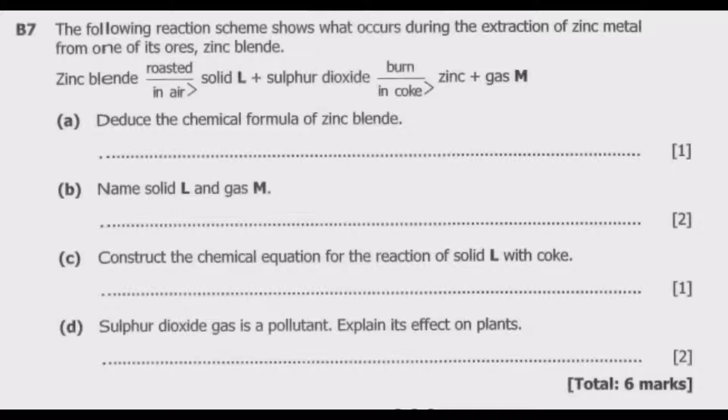The following reaction scheme shows what occurs during the extraction of zinc metal from one of its ores, zinc blende. Zinc blende roasted in air, then we have solid L plus sulfur dioxide, which burn in coke to give us zinc and a gas M. Deduce the chemical formula of zinc blende.